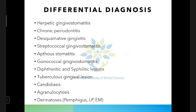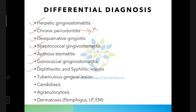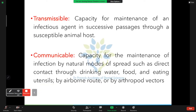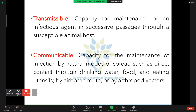Differential diagnosis includes herpetic gingivostomatitis, chronic periodontitis (though pockets are absent in ANUG), desquamative gingivitis, streptococcal gingivostomatitis, aphthous stomatitis, gonococcal gingivostomatitis, diphtheritic and syphilitic lesions, tubercular gingival lesions, candidiasis, agranulocytosis, and dermatosis. The key distinguishing feature between NUP and periodontitis is the absence of pockets in NUP, since pockets require healthy epithelium which is absent due to necrosis.